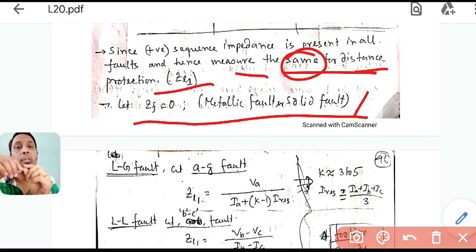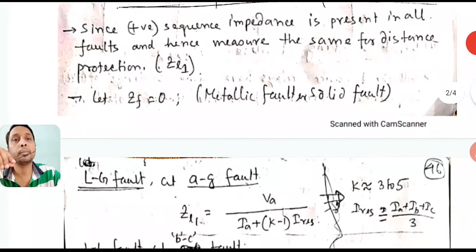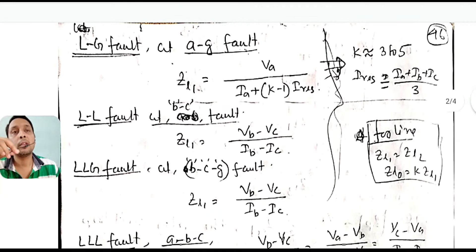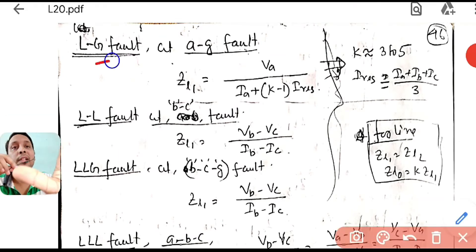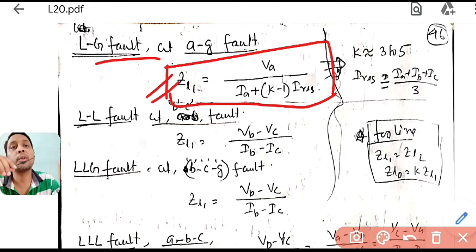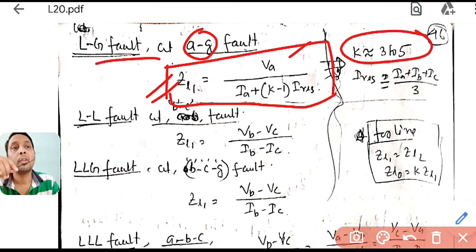For analysis, let us consider a metallic or solid fault — meaning fault impedance is zero. For an AG fault, using symmetrical components (positive, negative, zero sequence all connected in series), solving gives: Z_AG = VA / (IA + K×I_residue), where K is a constant from 3 to 5, and I_residue = (IA + IB + IC) / 3. These derivations incorporate the transmission line's sequence impedance relationships.